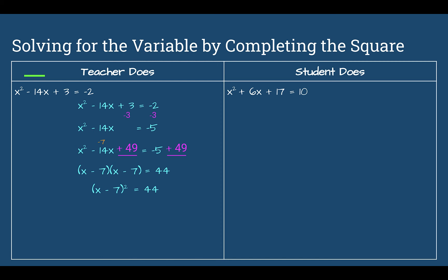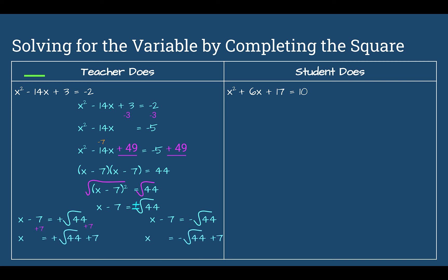Take the square root of both sides: x minus 7 equals the square root of 44. Split into positive and negative: x minus 7 equals positive square root of 44, and x minus 7 equals negative square root of 44. Add 7 to both sides to solve for x: x equals square root of 44 plus 7 and negative square root of 44 plus 7. Swing the 7 out front: x equals 7 plus or minus the square root of 44.